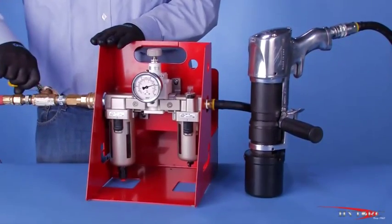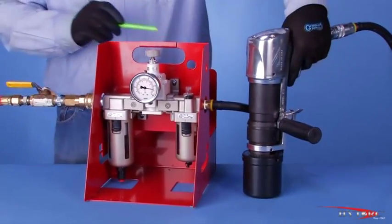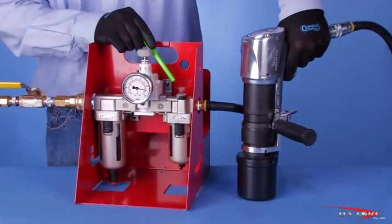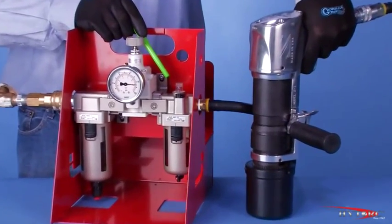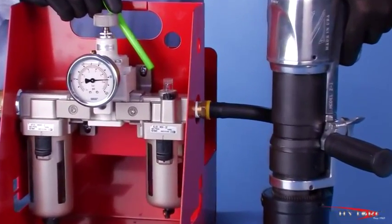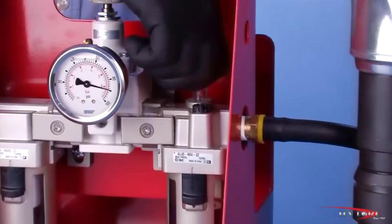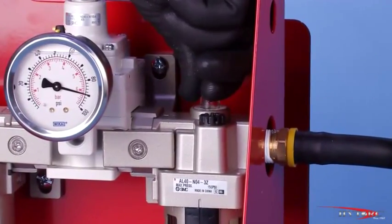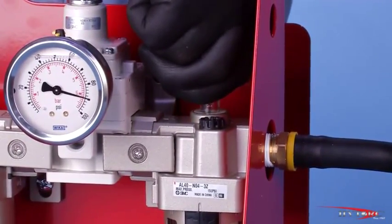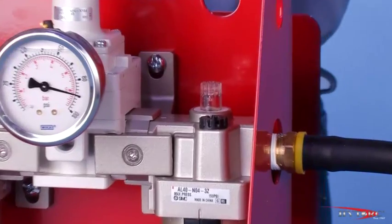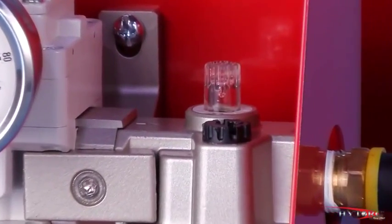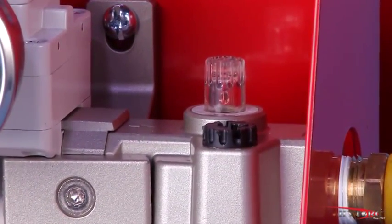With air flowing to the tool, you will be able to see drops of oil form inside the clear plastic knob on top of the lubricator. Unscrewing this knob increases the oil flow and screwing it in decreases the oil drops. Adjust the flow to approximately one drop every 10 seconds.